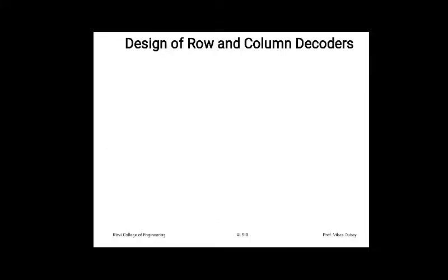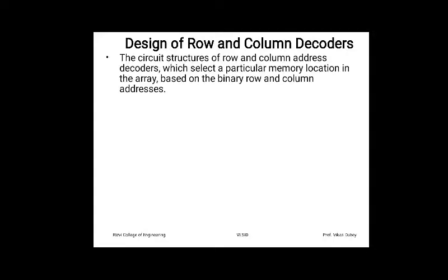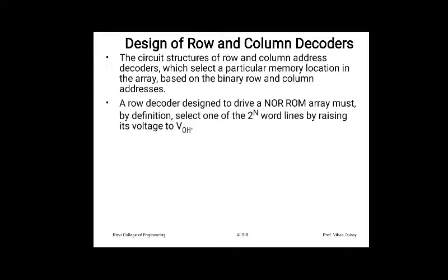Next we will see how to design row and column decoders for selecting word lines and data lines C1, C2, C3, C4. The circuit structure of row and column address decoders selects a particular memory location based on a binary address. A row decoder designed to drive a NOR ROM array must select one of 2^N word lines by raising its voltage to VOH.